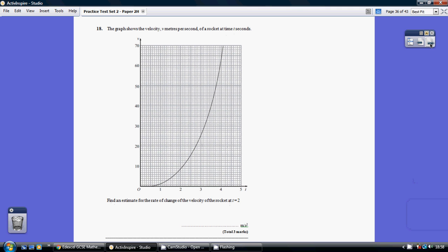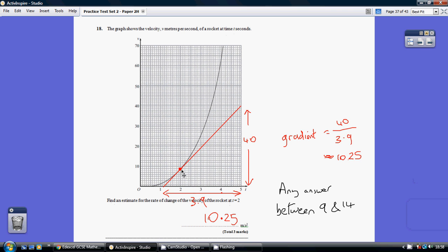So we have to get our ruler out and pop in a tangent at the point where t equals 2. Remember a tangent is a straight line that just touches the curve but doesn't actually cross it per se. So it just touches it here.